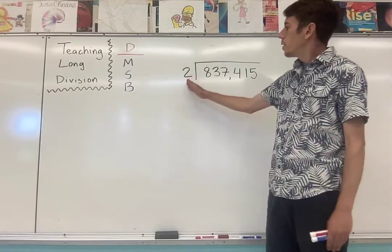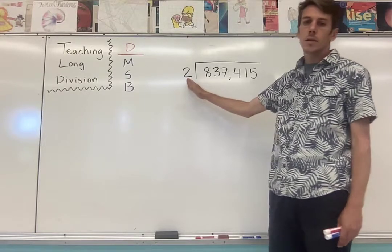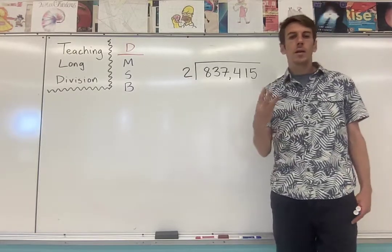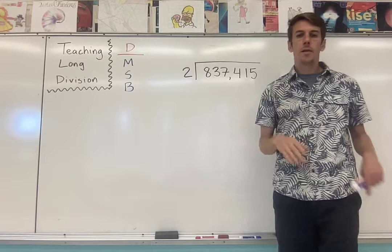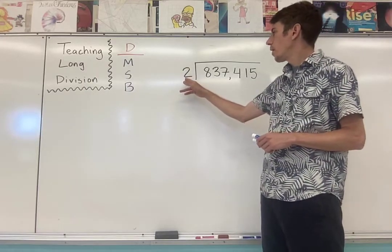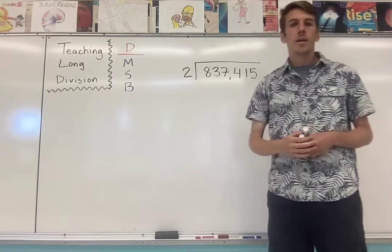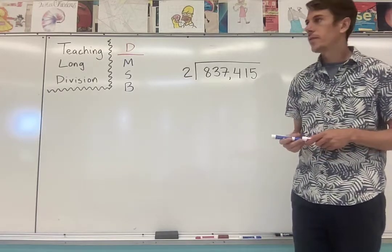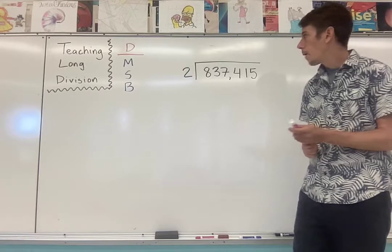Start out with easy divisors: two, three, four, five. I would stick to those for now. Don't give students a two-digit divisor like 37. You'd want to use a calculator for that. It's not worth it.